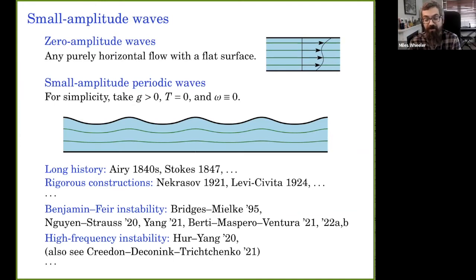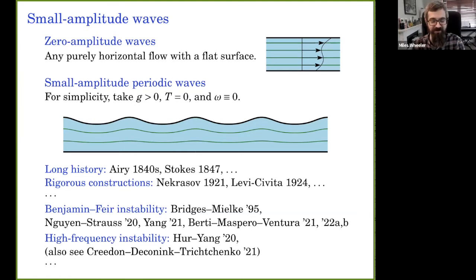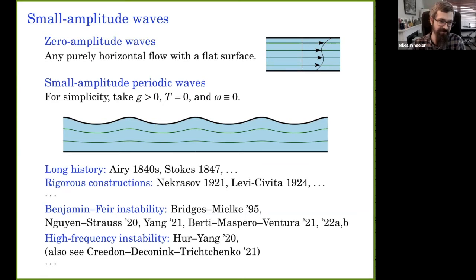What solutions do we have? If all fluid particles move horizontally and their horizontal velocity depends only on y — a shear flow — this automatically solves the steady Euler equations. For more interesting solutions that look like waves in a river or canal, a natural starting point is small perturbations of this shear flow. I'll use 'small amplitude' to describe these waves.